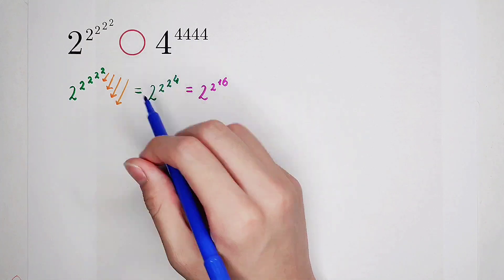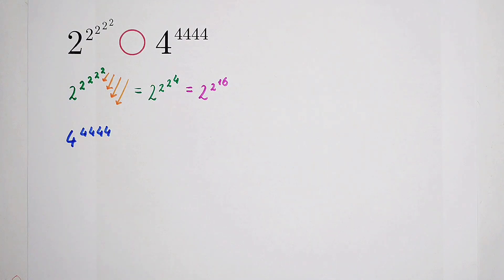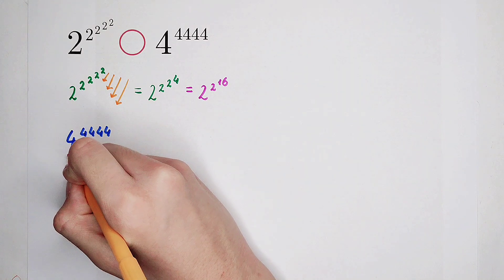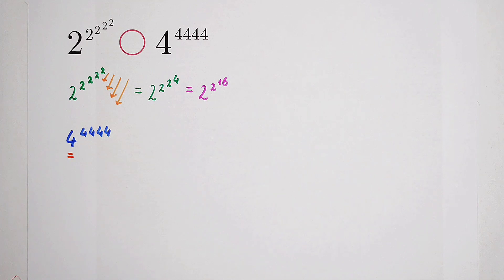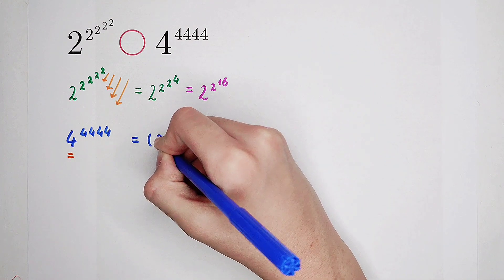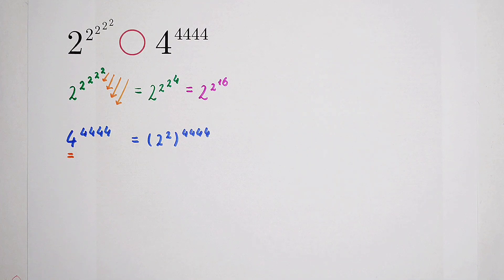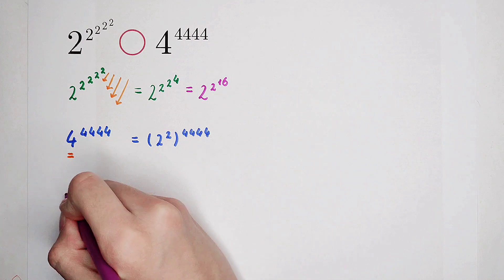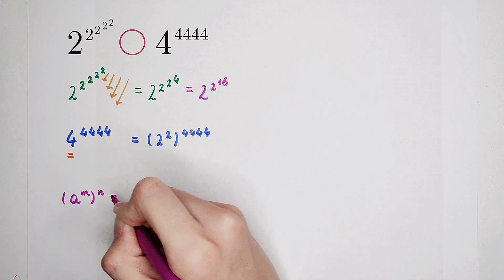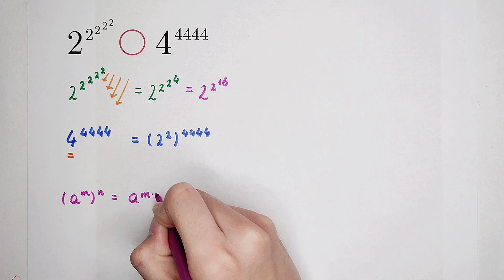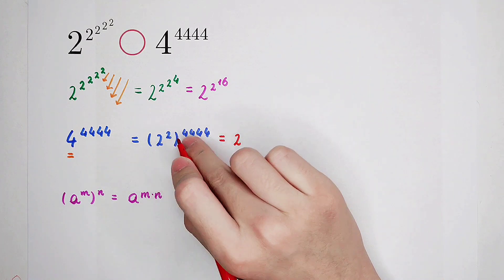Now it is the turn of the right-hand side: 4 to the power of 4,444. We know that 4 is a nice number since it is 2 squared. So it equals 2 squared, all to the power of 4,444. I'm going to use the formula: A to the power of M, all to the power of N, equals A to the power of M times N.